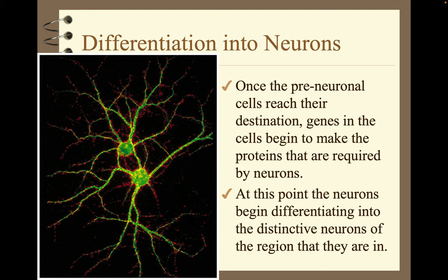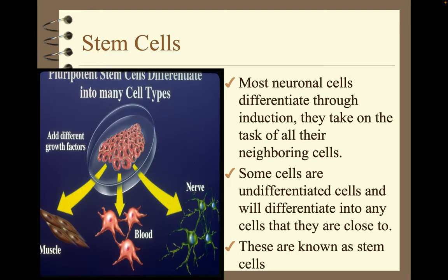Once the pre-neuronal cells reach their destination, genes in the cells begin to make the proteins required by neurons. The neurons then begin differentiating into the distinctive neurons of the region they are in. Most neuronal cells differentiate through induction — they take on the task of all their neighboring cells. Some cells are undifferentiated and will differentiate into any cells they are close to; these are known as stem cells.